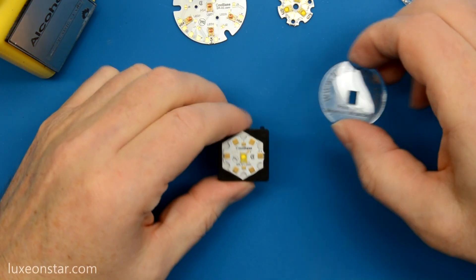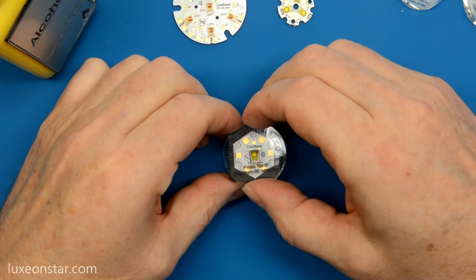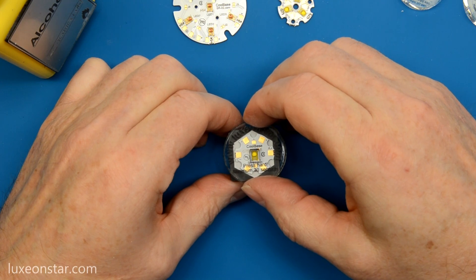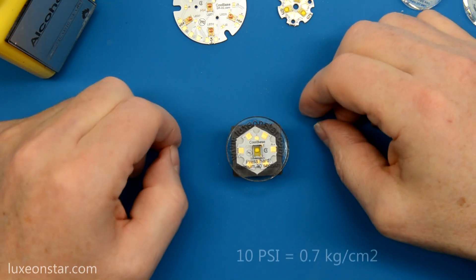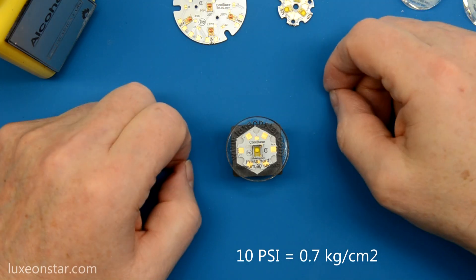To use the press, you simply position it over the LED assembly with the LED in the opening, and then apply 10 pounds of pressure or more for at least 30 seconds.